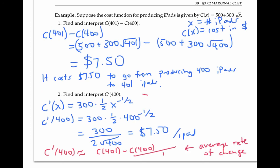Once again, C'(400) is called the marginal cost and represents the rate at which the cost function is increasing with each additional item.